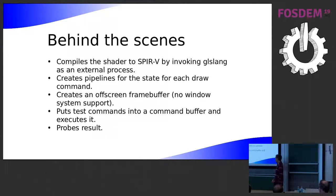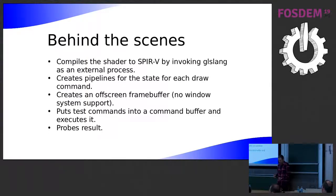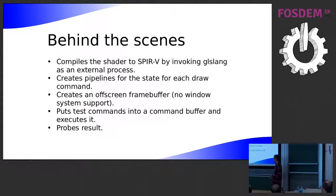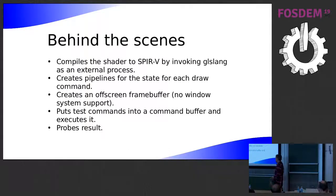Behind the scenes, Vulkan can't consume GLSL shaders directly — it needs SPIR-V shaders. So VKRunner compiles the GLSL shaders into SPIR-V by invoking glslang as an external process. It creates pipelines for all the state needed to run the commands, and creates an off-screen frame buffer. Unlike ShaderRunner on Piglet, which uses the window system to create an X window or Wayland window, VKRunner uses an off-screen buffer since you don't necessarily need a window system for Vulkan. Then it puts all the test commands into a command buffer and executes them, and you can probe the result as one of the test commands.